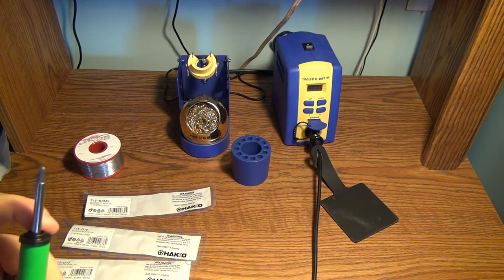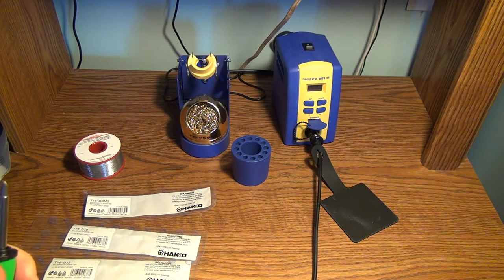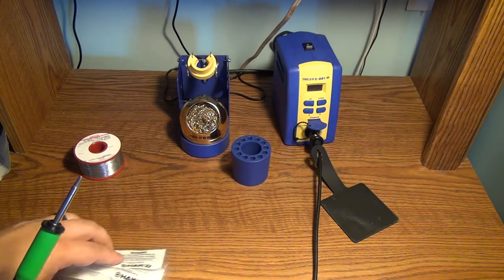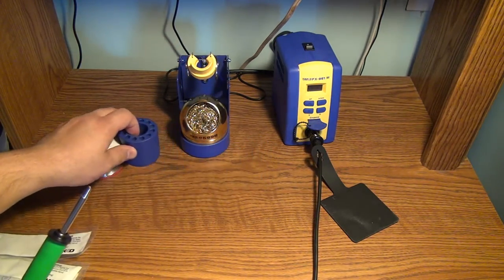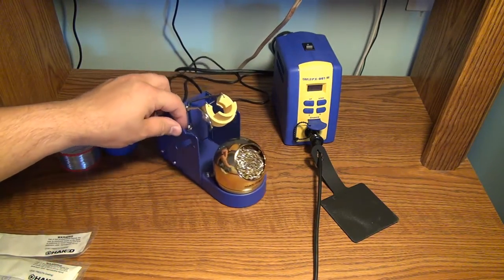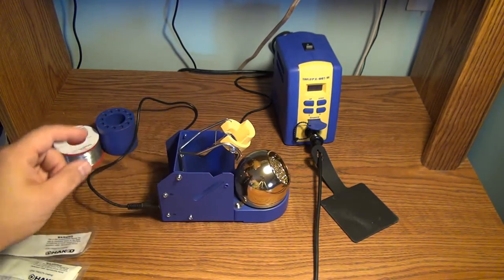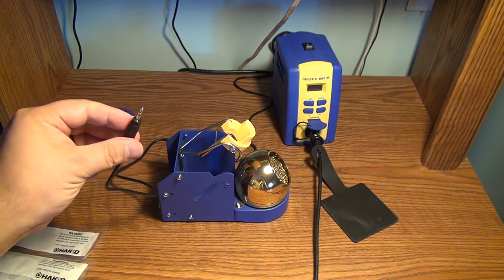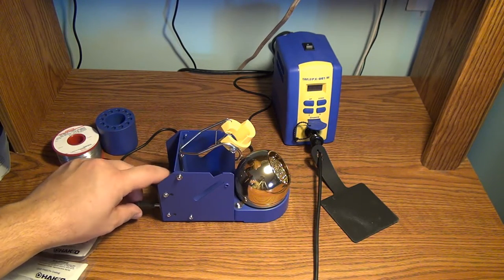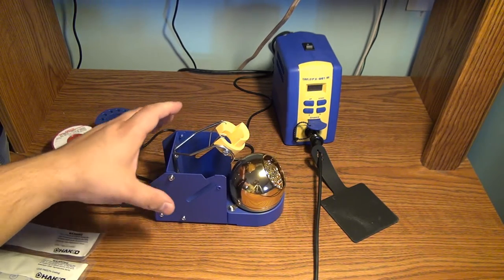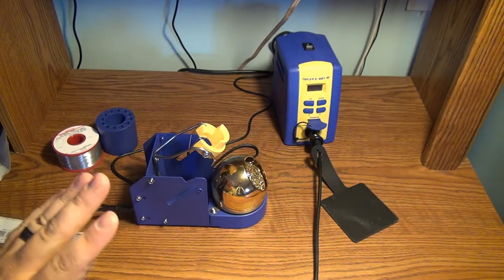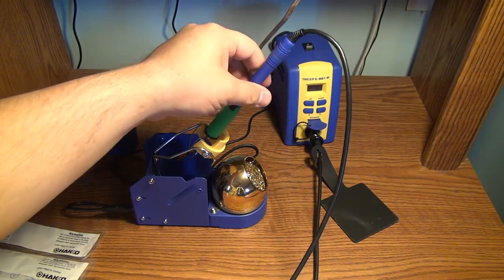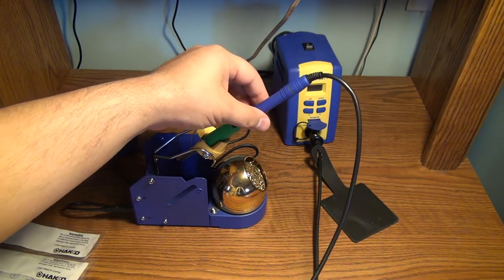The other feature that I was looking for is the ability to turn the tip off with the iron hung up in the stand. So now let's take a closer look at the stand because what Hakko did is actually kind of interesting. If you look back here, there is a cord that comes out of the stand. This is just a regular 3.5mm headphone jack.